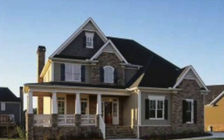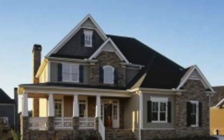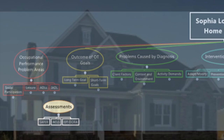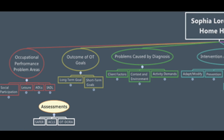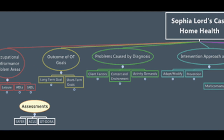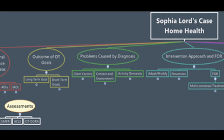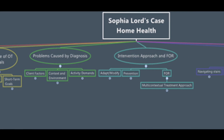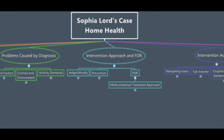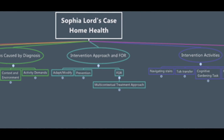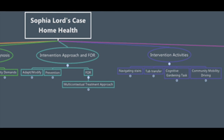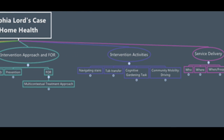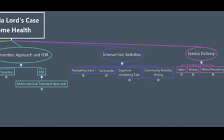Sophia has returned home and is receiving occupational therapy home health services. Here is a snapshot of Sophia's occupational therapy home health continuum of care. We will focus on her occupational performance areas, long-term and short-term goals, problems caused by her diagnosis, intervention approaches and activities, as well as her service delivery.